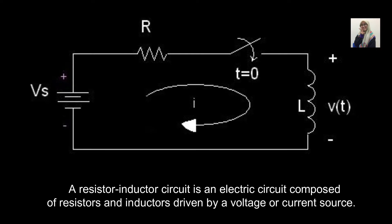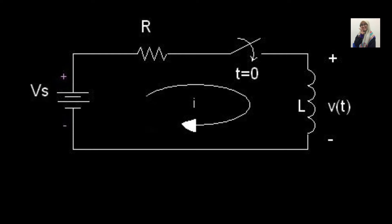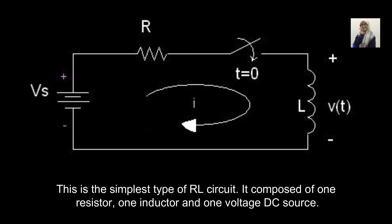A resistor inductor circuit is a first-order circuit composed of a resistor and inductor driven by a voltage or current source. This is the simplest type of circuit. It's composed of one resistor, one inductor, and one voltage DC source.